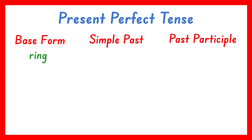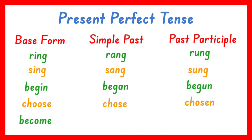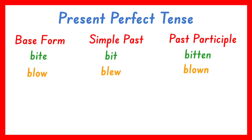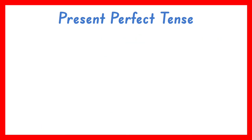Here are some verbs with different simple past and past participle forms: Ring – rang – rung; Sing – sang – sung; Begin – began – begun; Choose – chose – chosen; Become – became – become; Bite – bit – bitten; Blow – blew – blown; Fly – flew – flown; Draw – drew – drawn; Eat – ate – eaten.